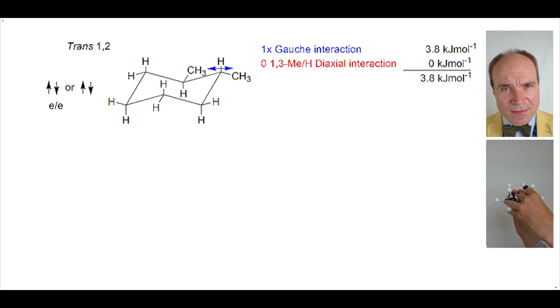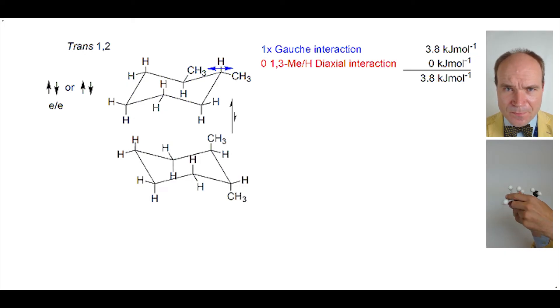Let's take this chair and ring flip it. What can we see in this alternate chair now? Well, both methyl groups are axial, and that's certainly different. But look carefully, and you'll see both methyl groups are still on opposite sides of the ring, so that's stayed the same.